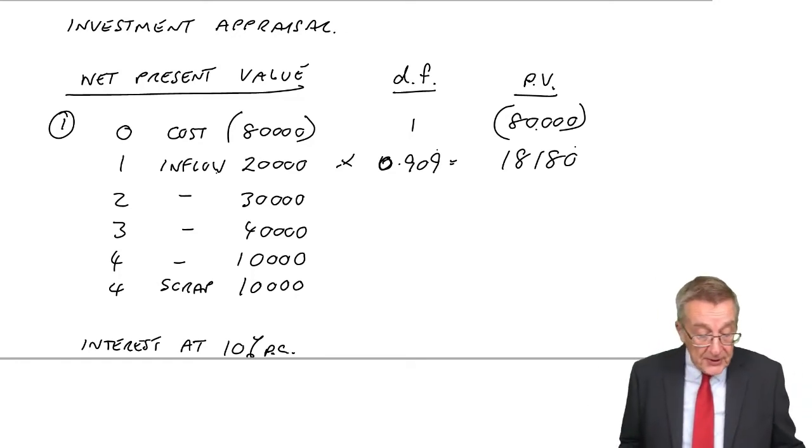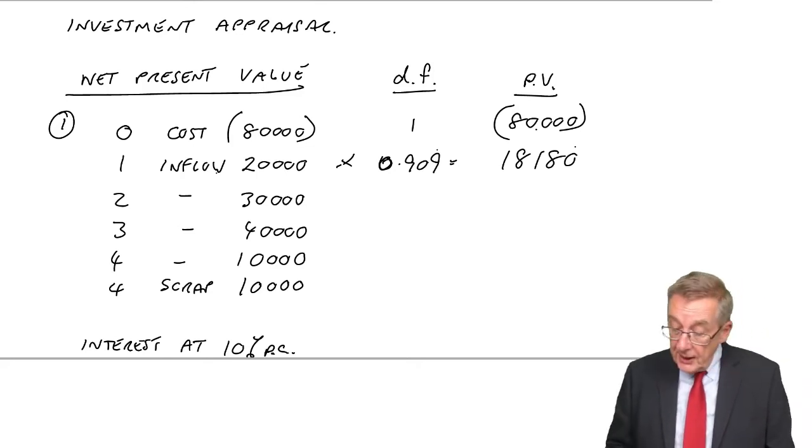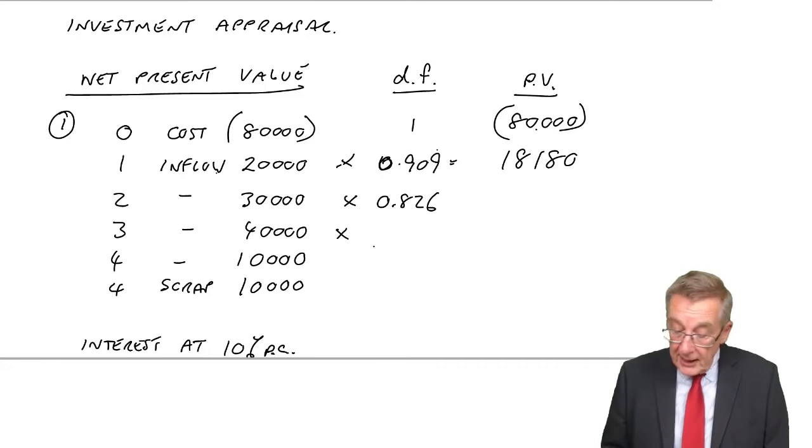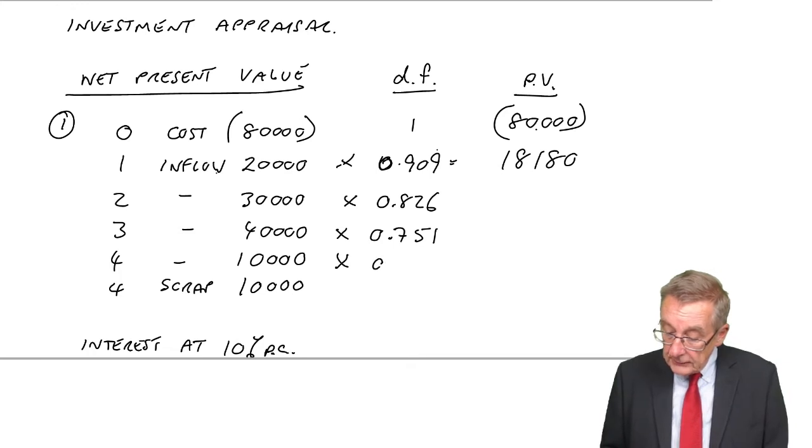And similarly, for each of the flows, in two years' time, the factor for two years at 10% is 0.826. For three years, 0.751. For four years, 0.683. And again, for four years, 0.683.